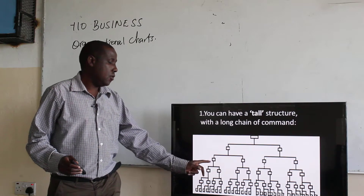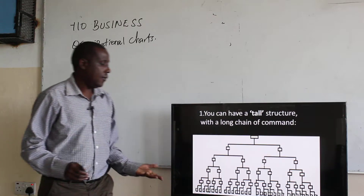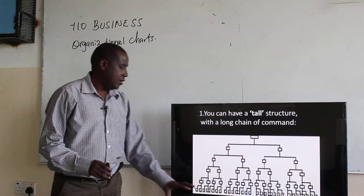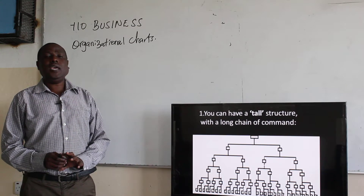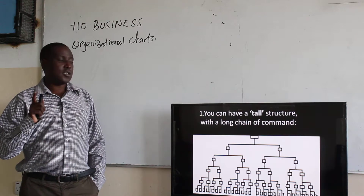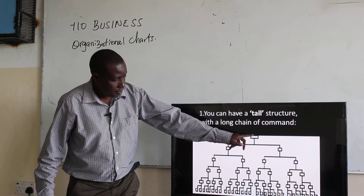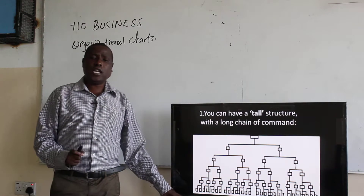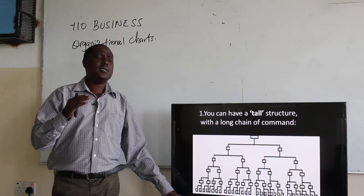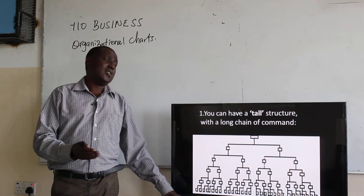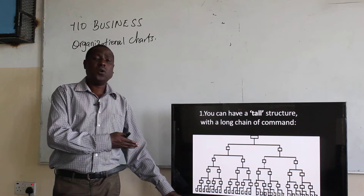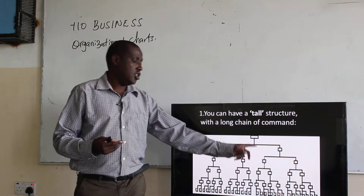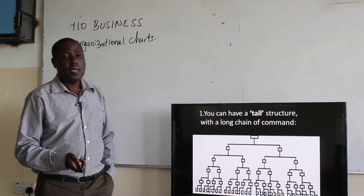Then under them, we have four — two here, two here. Then under each of those, there are two again, and it goes on like that. So this one is a tall structure, from the top person all the way down to the bottom group of people. It is a very long chain of command. One disadvantage is that information will take long before it reaches the person at the bottom.